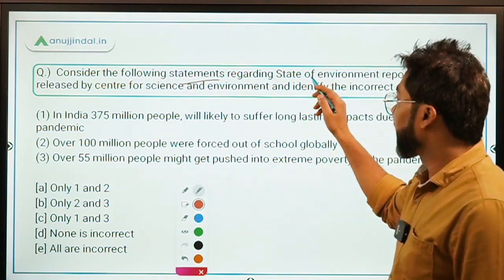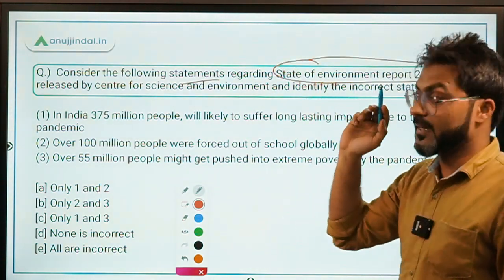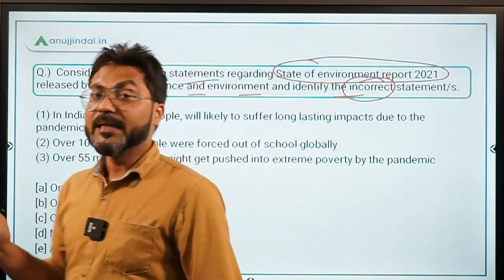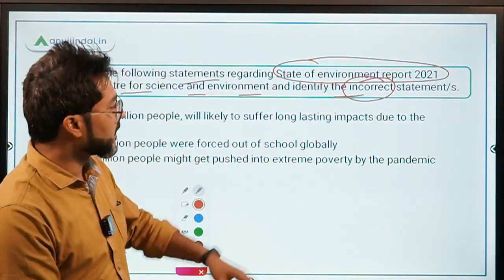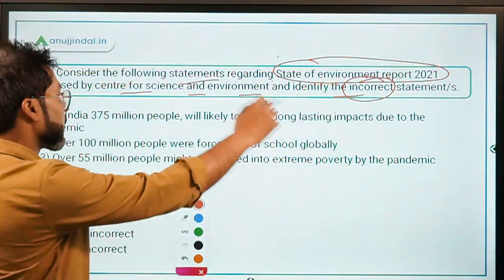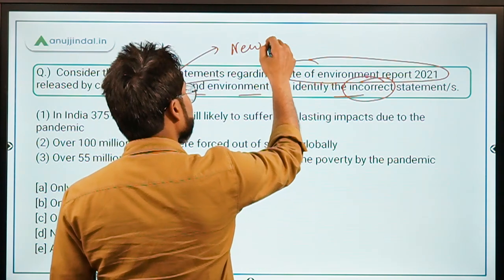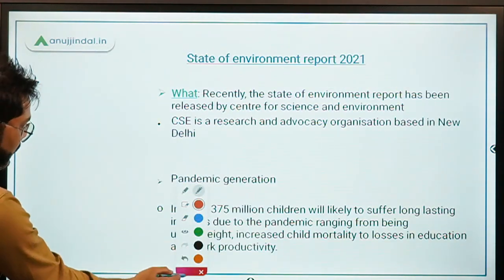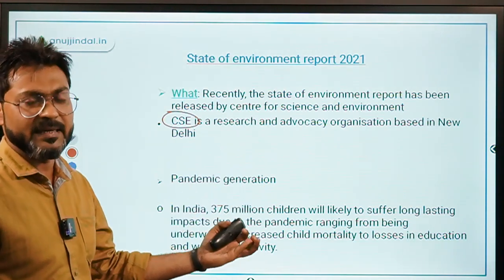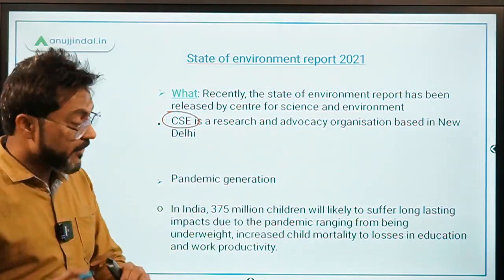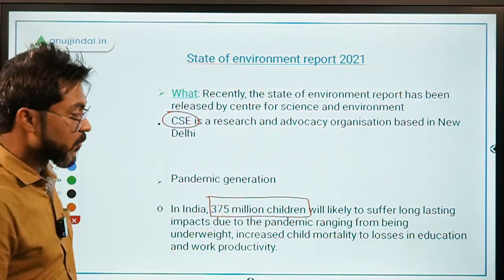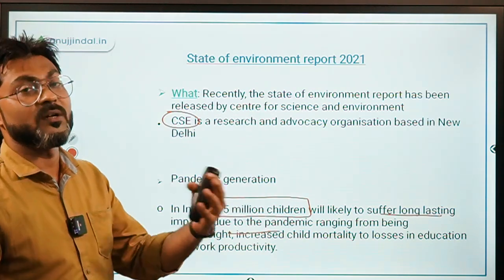Question two: Consider the following statements regarding the State of Environment Forest Report 2021, released by the Centre for Science and Environment. You have to identify the incorrect statements. The Centre for Science and Environment is a research and advocacy organization based in New Delhi. According to this report, in India there are 375 million children who will likely suffer long-lasting impacts of the coronavirus pandemic.